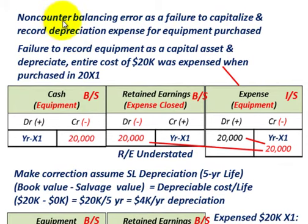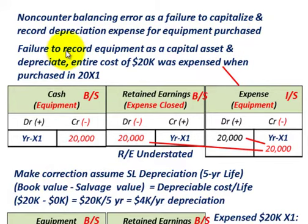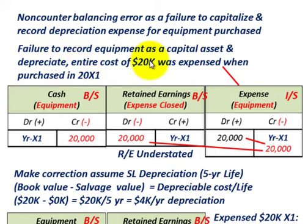What we're going to be going over in this example is a non-counterbalancing accounting error — the failure to capitalize and record depreciation expense on some equipment that we purchased. We failed to record the equipment as a capital asset and depreciate it; instead, the entire cost of this equipment, $20,000, was expensed when it was purchased in year 20X1.